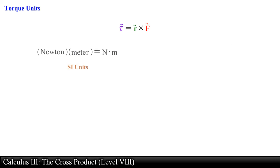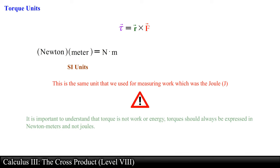The SI unit of torque is the Newton meter. Now this is going to be a little confusing because this was the same unit that we used for measuring work, which was introduced in the dot product video series. In the case of work, the unit was measuring energy in joules. Despite this, it is important to understand that torque is not work or energy. Torques should always be expressed in Newton meters and not joules. This will help avoid mistakes and misunderstandings.